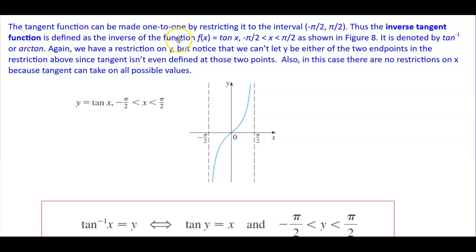The tangent function can be made one-to-one by restricting it to the interval negative pi over 2 to pi over 2.